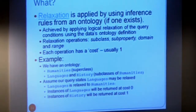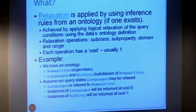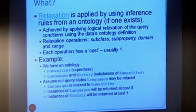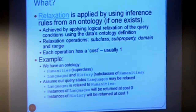The subclass operation usually has a cost of one. Using the humanities example: imagine you're at university studying humanities - arts subjects. Languages and history could be subclasses of humanities. If the query states relaxation is allowed on languages, anything matching languages is returned at cost zero (exact match). Anything belonging to history is returned at cost one, because relaxing to humanities suddenly grabs history, languages, art, drama, and whatever else may be a subclass.